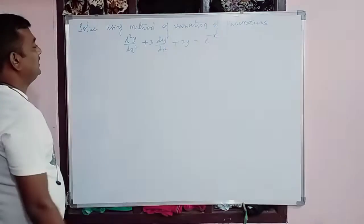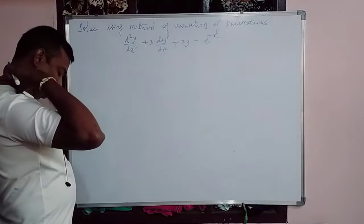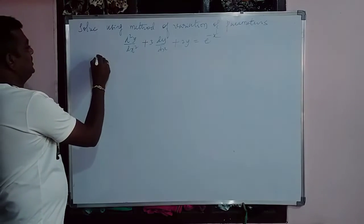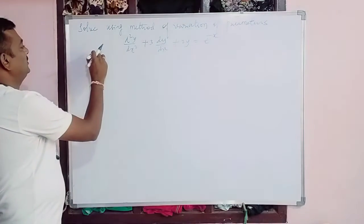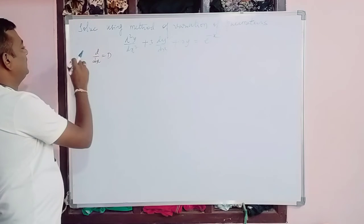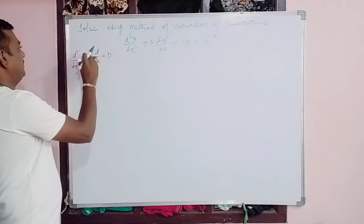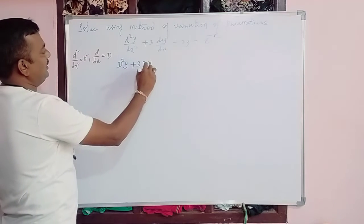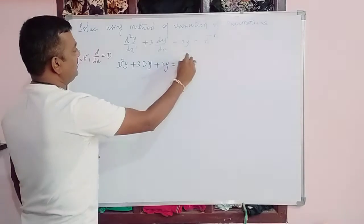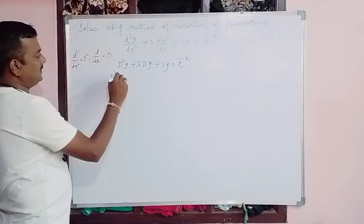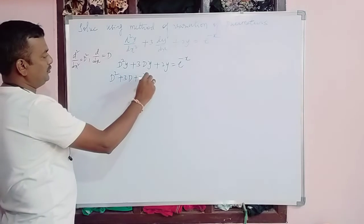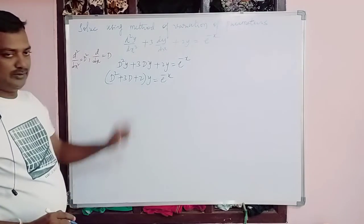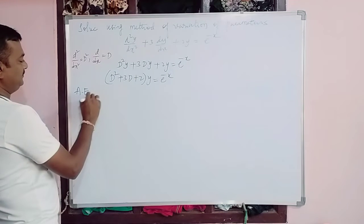This is a very easy example. First, as usual, we need to express it in the standard form. We substitute d/dx with capital D and d²/dx² with capital D². It becomes: (D² + 3D + 2)y = e^(-x), which is now in standard form f(D)·y = φ(x).